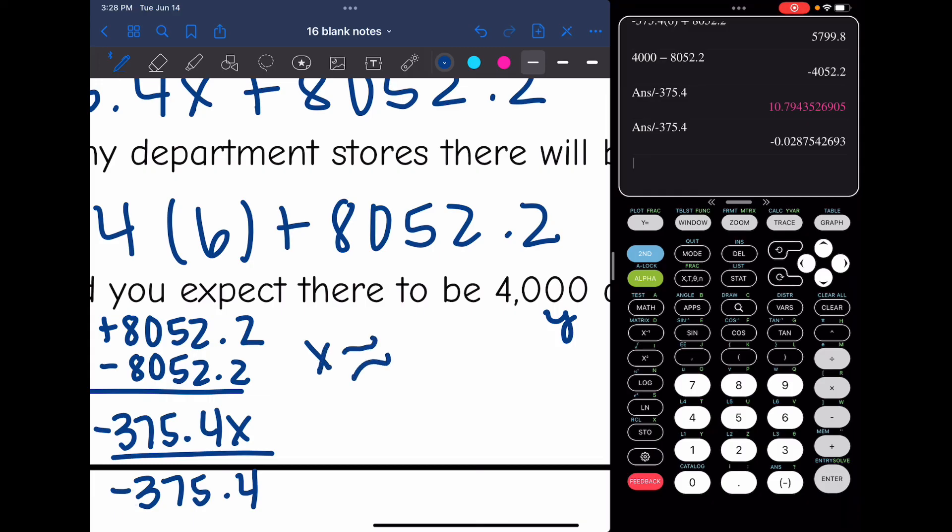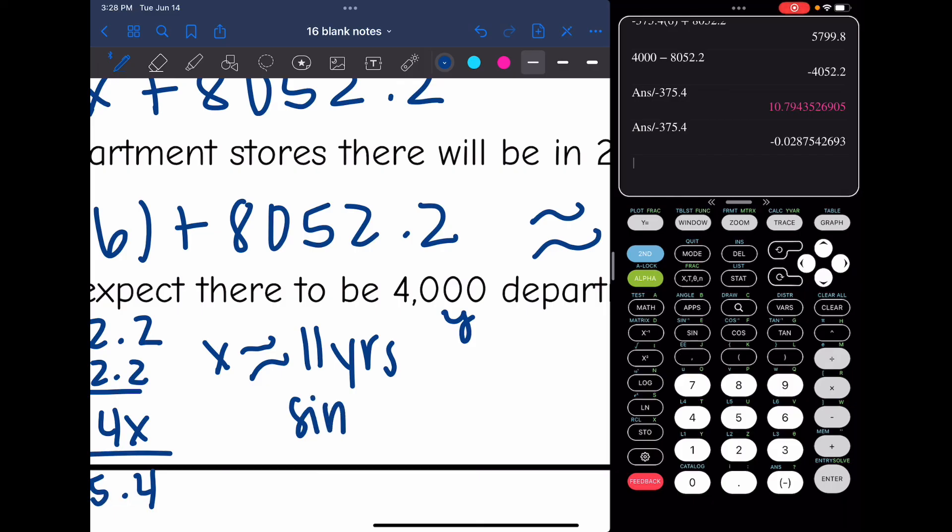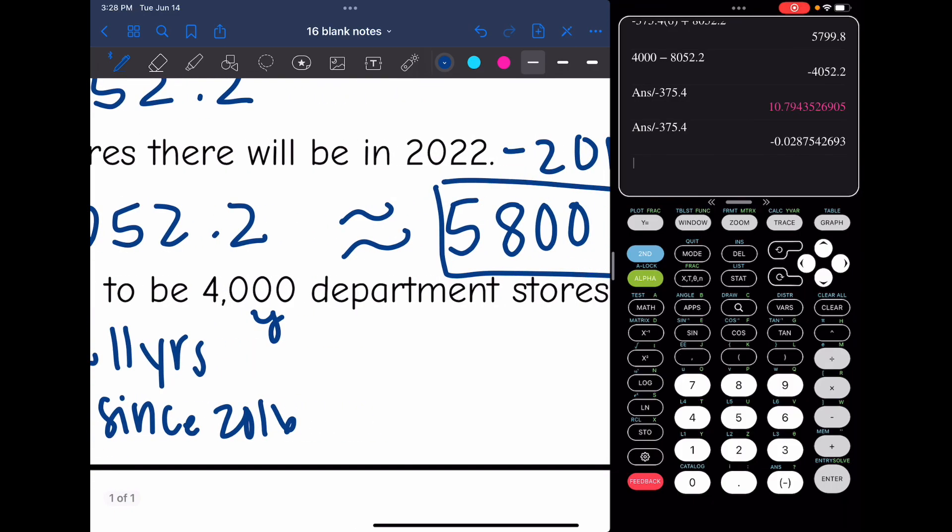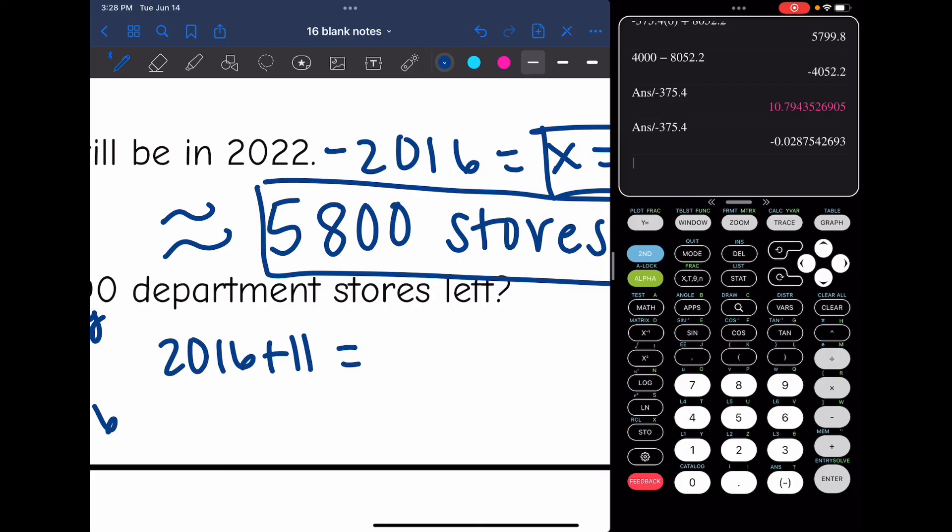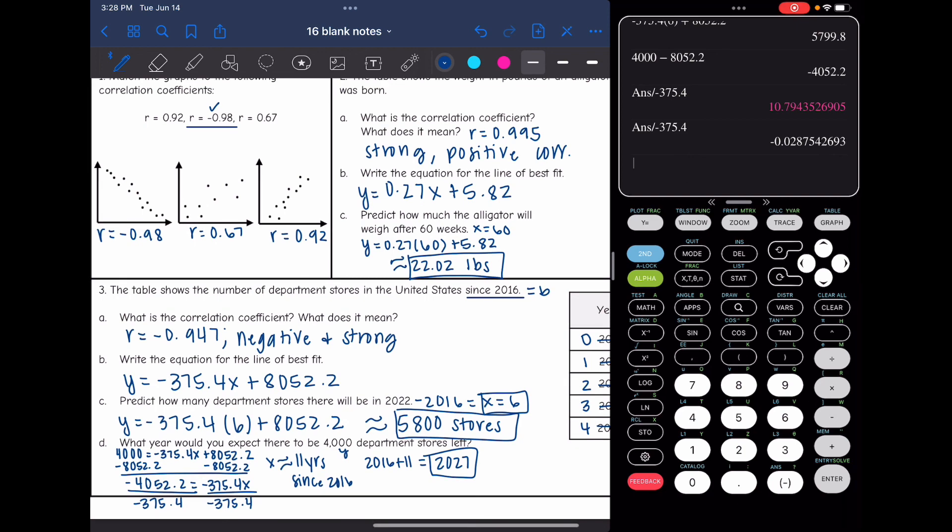So remember, that's 11 years since 2016. So we would do 2016 plus 11 to figure out the number of years. So that would be 2027. So based on that trend in 2027 is when there would be about 4,000 department stores left.